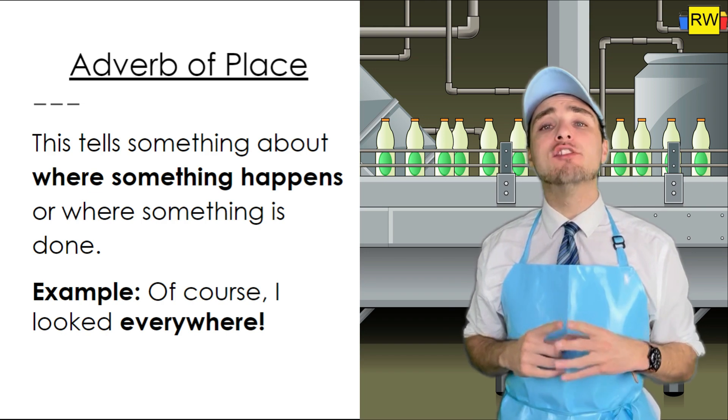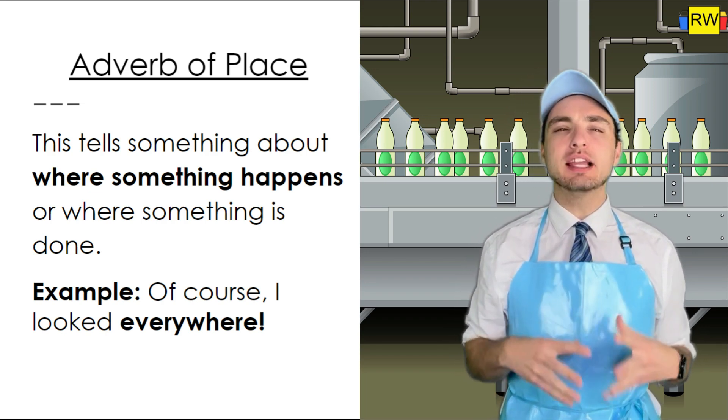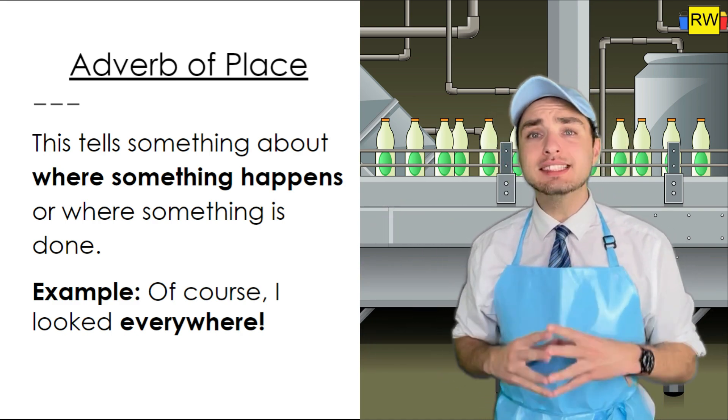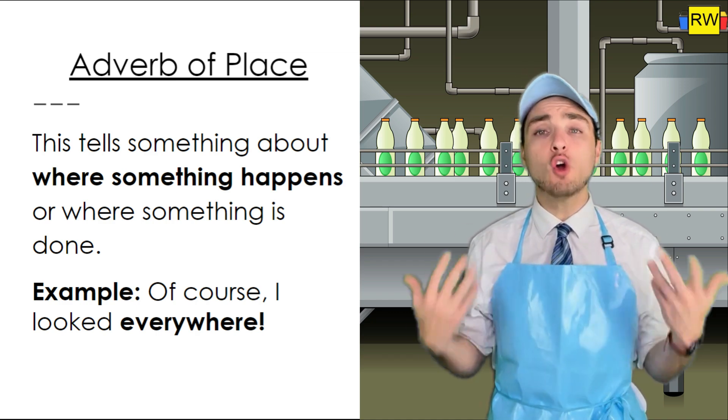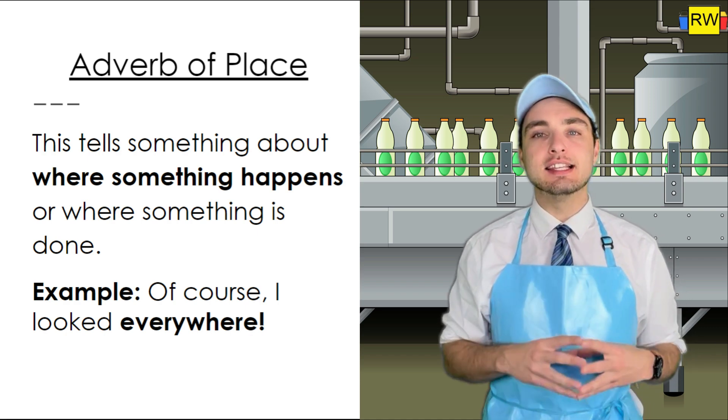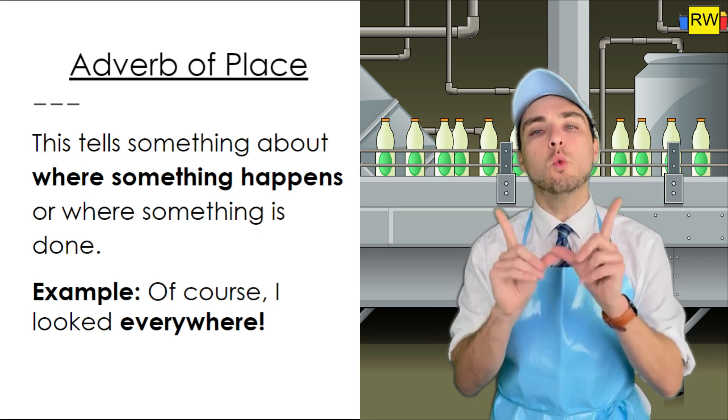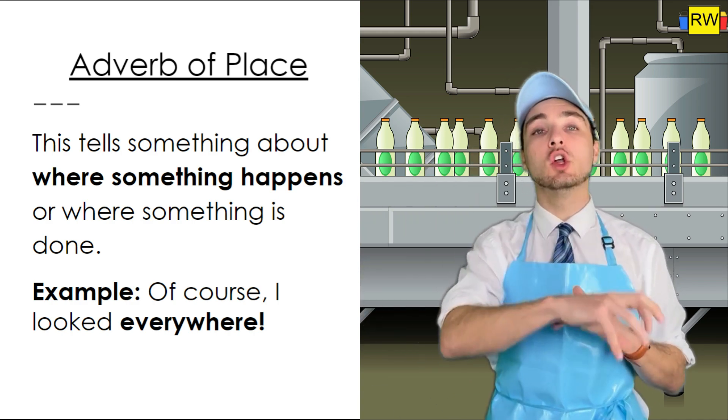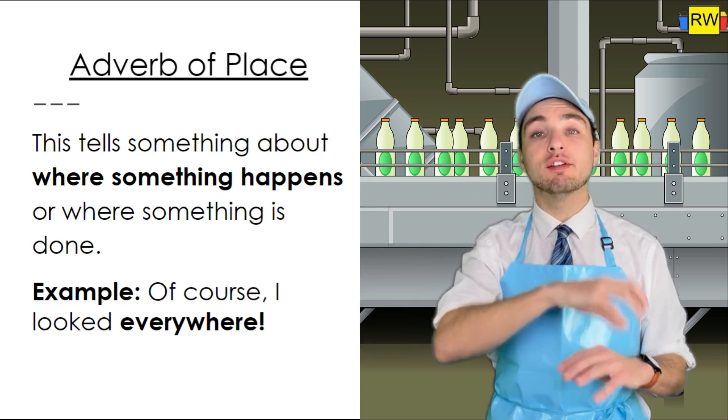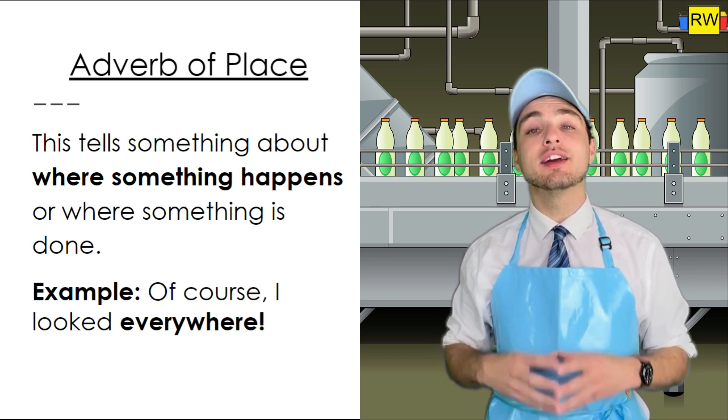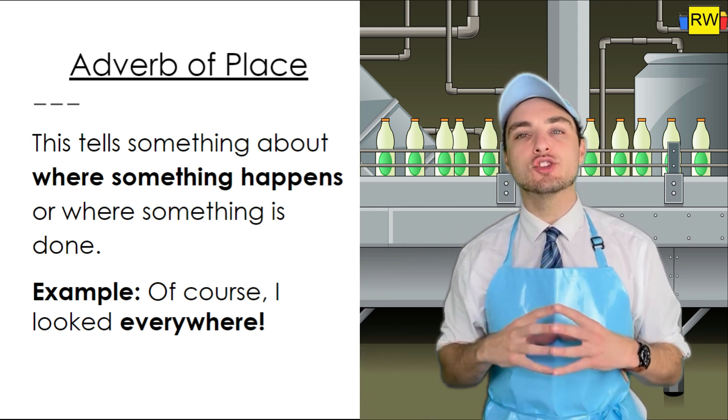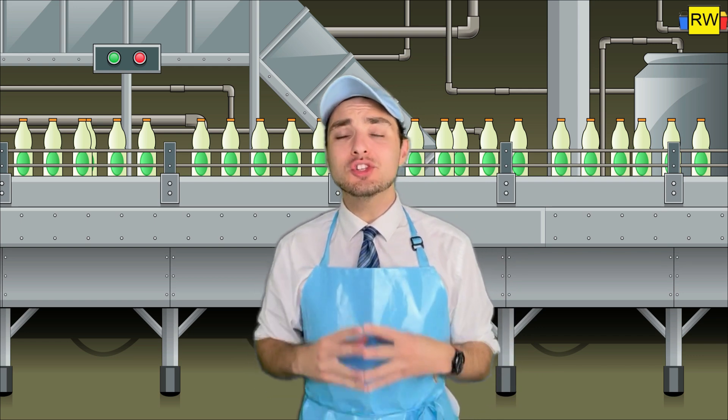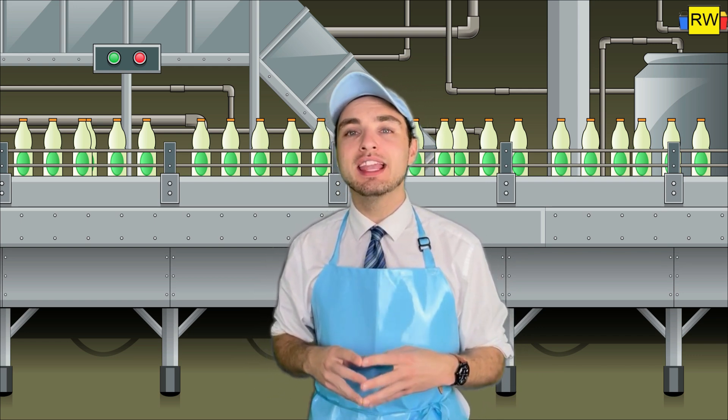Next, we have adverbs of place. This tells something about where something happens or where something is done. For example, we have this sentence: Of course I looked everywhere. In this sentence, the main verb is looked. Well, where did we look? We looked everywhere. The word everywhere modifies looked. It gives it a place in which the verb takes place. Therefore, everywhere is the adverb of place, adding that extra description. That was a lot of information, Grammar Goodies. So, I think we should go ahead and ask for some employee assistance.